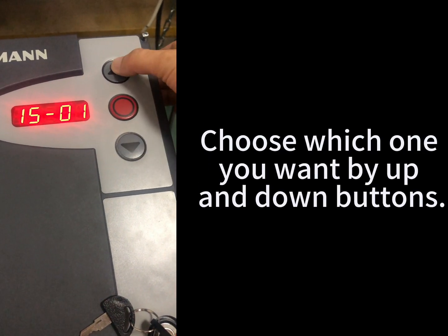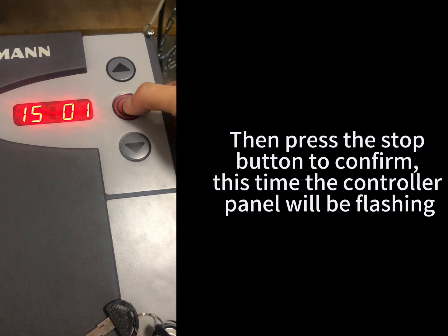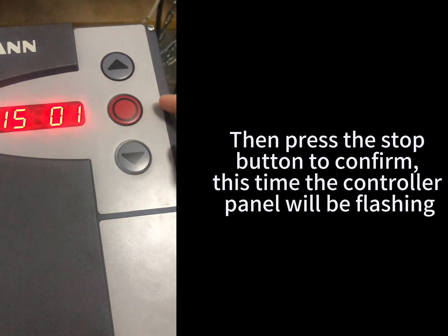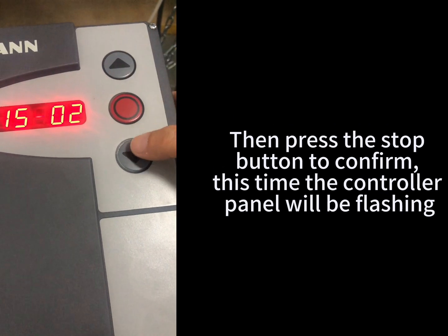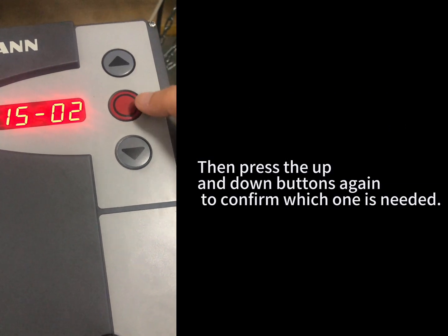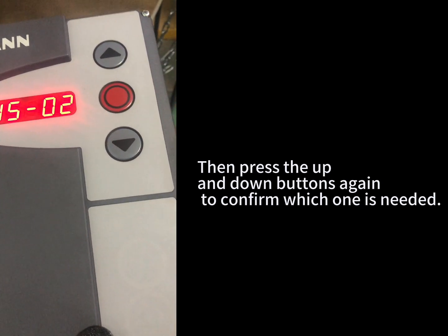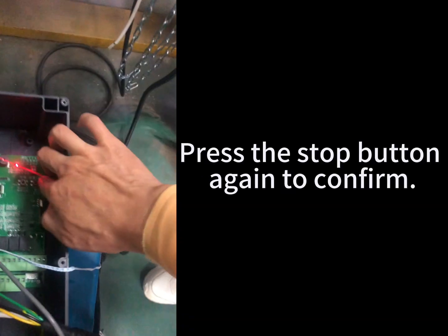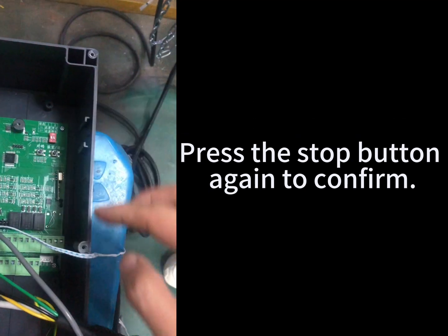Choose which one you want by up and down. Then press the stop button to confirm. This time the controller panel will be flashing. Then press the up and down buttons again to confirm which one is needed. Press the stop button again to confirm.